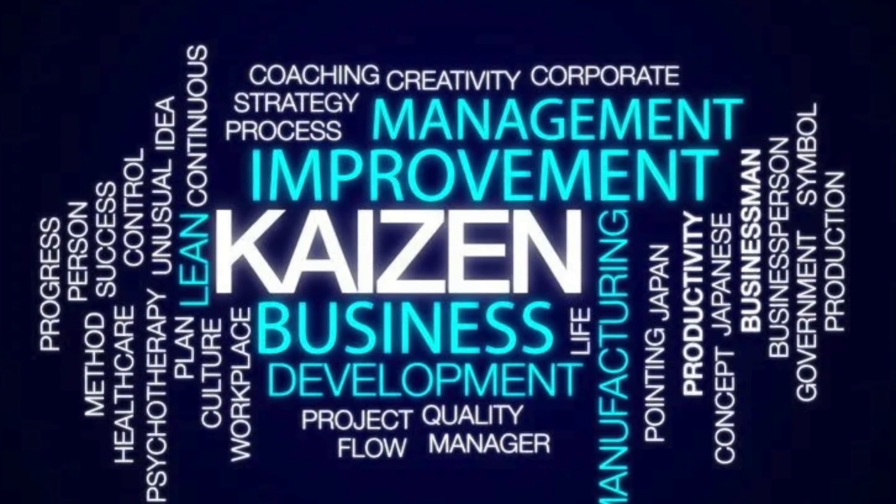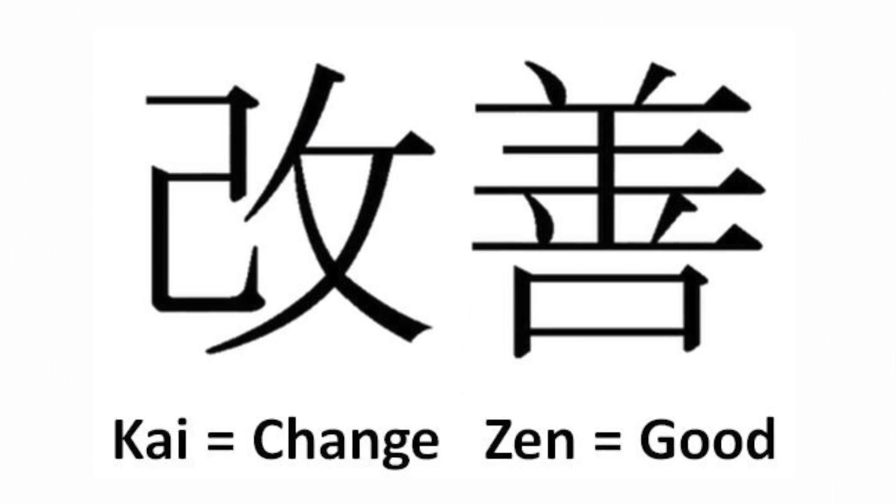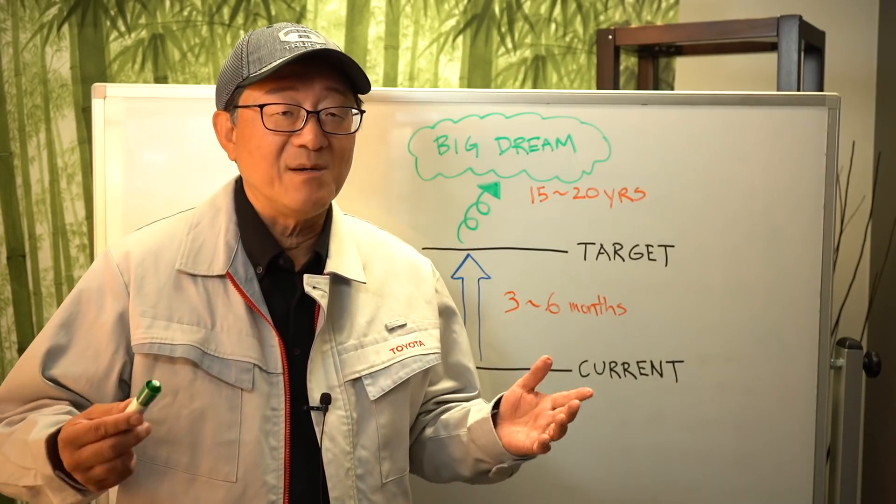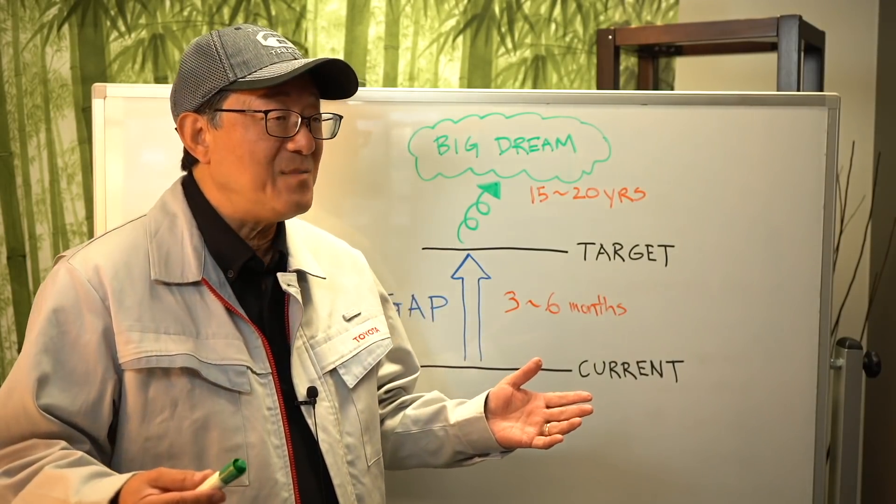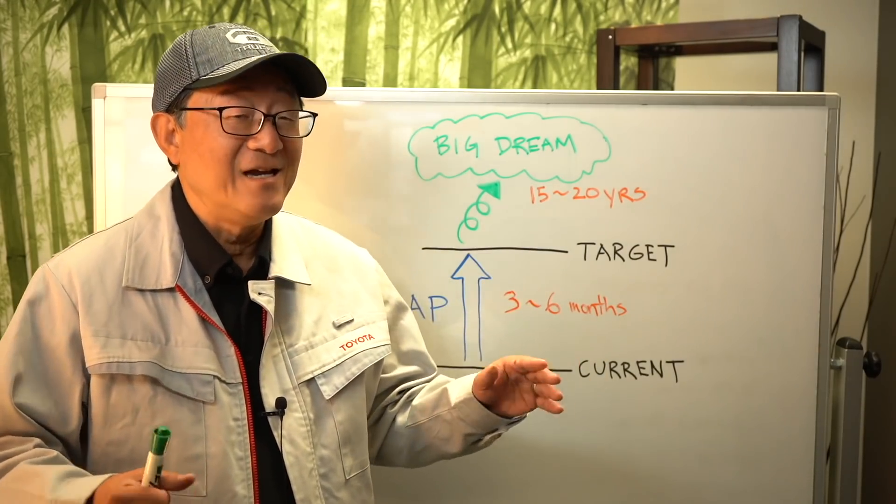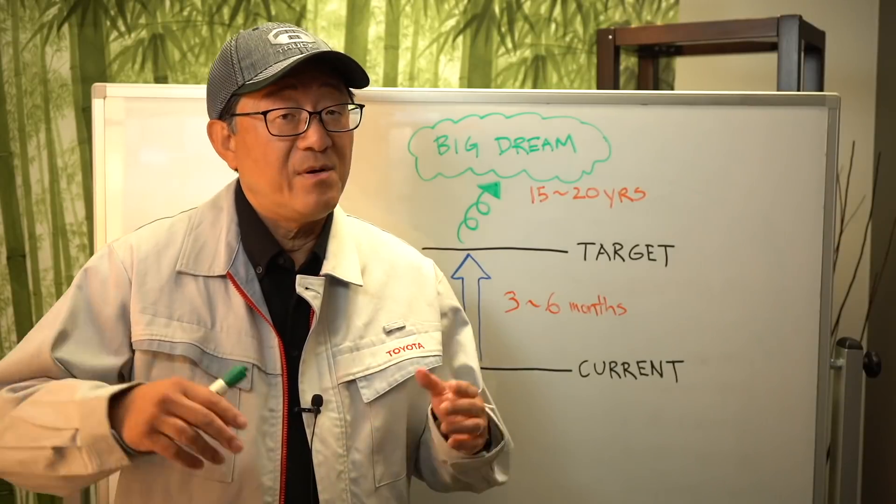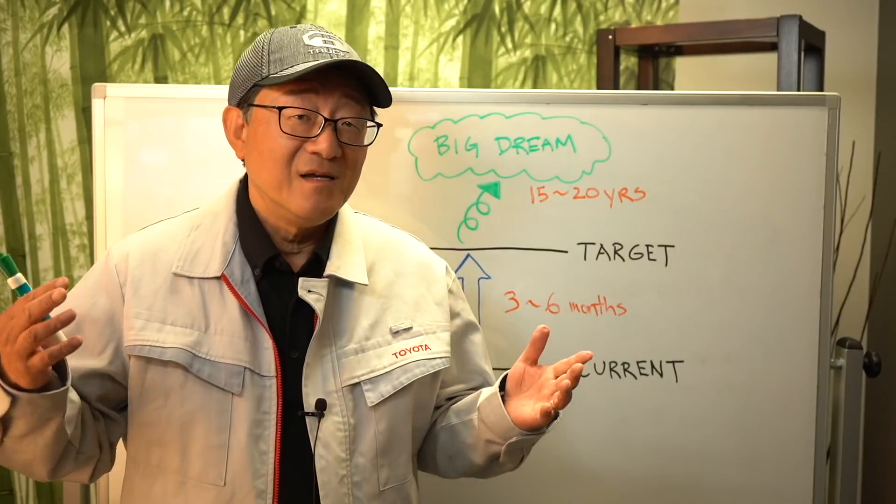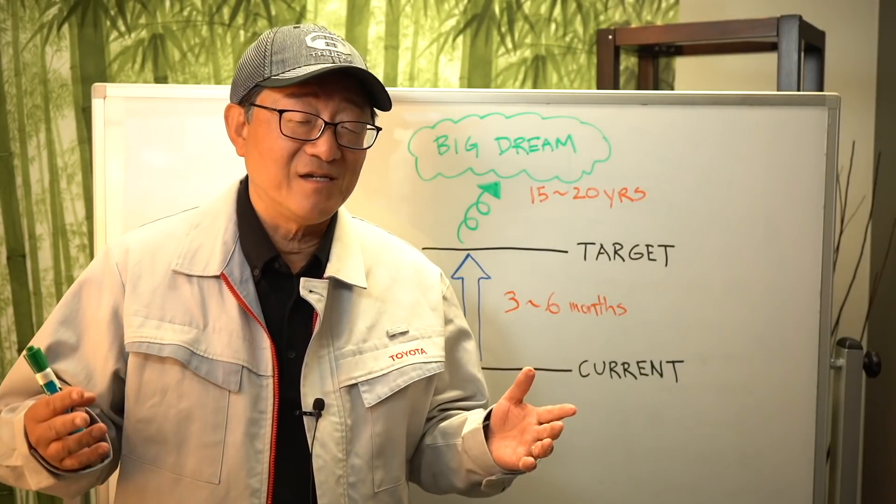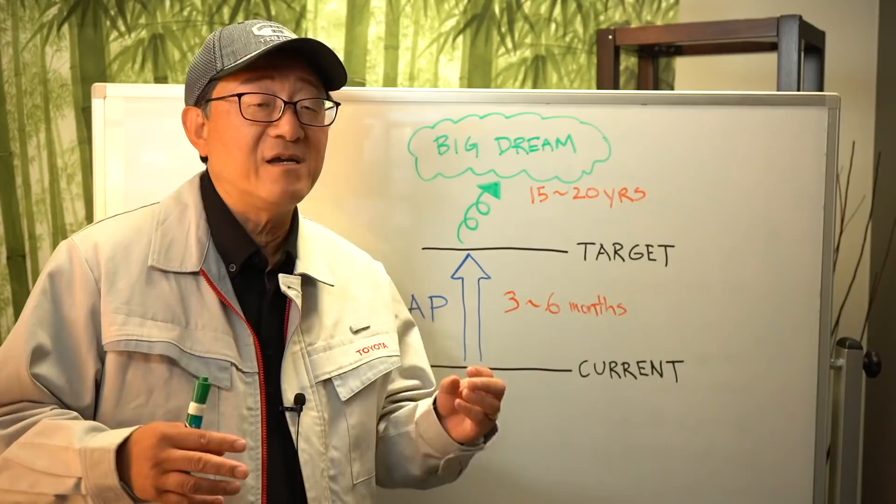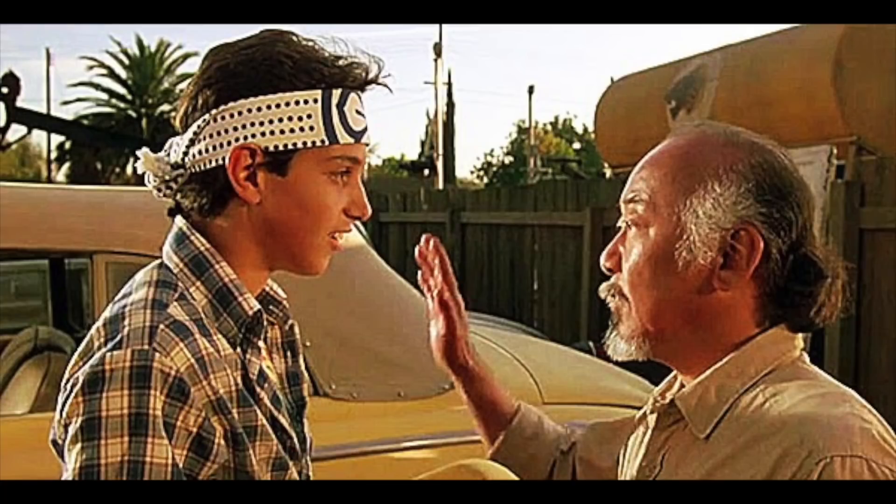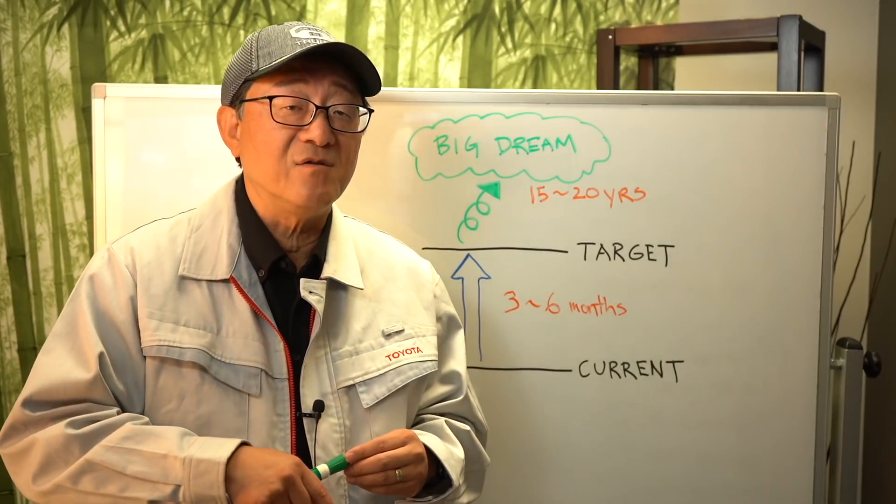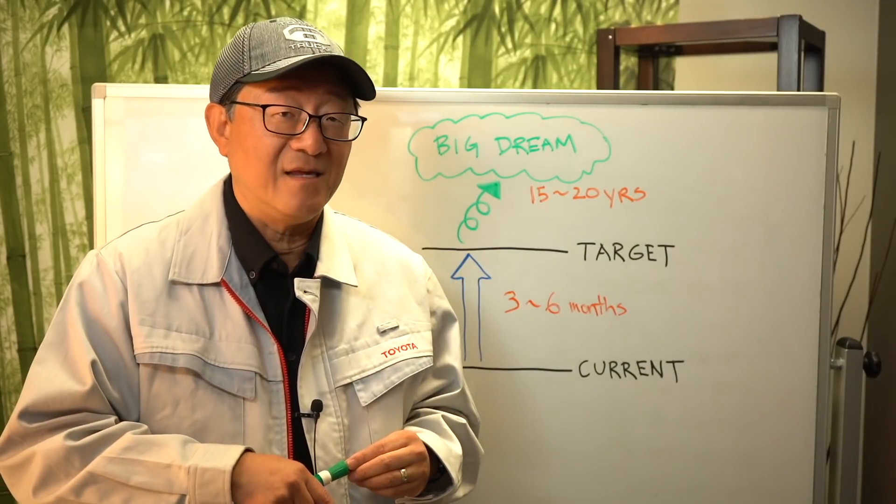Kaizen is a Japanese word that means good change or change is good. As you know, in the Western culture we don't like change. When someone says change is coming, we kind of run away from it saying I don't want change, I'm happy with what I have. But in the Japanese culture, especially in Toyota's culture and mindset, they embrace the change, they love the change because they know changes will make everything better. And this concept of taking a process or product or something and making it better every single day, that thinking is called Kaizen thinking.